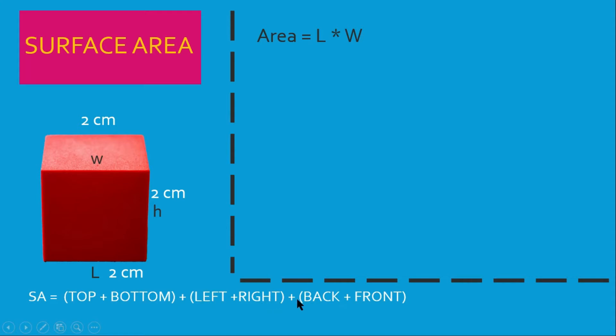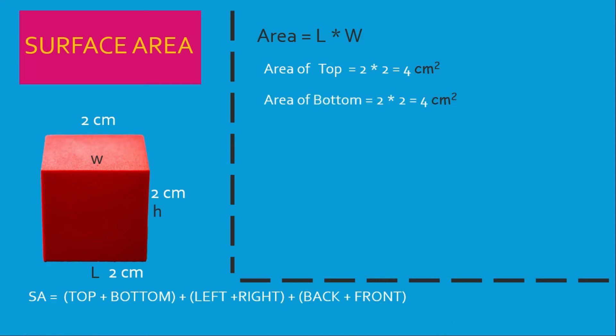Let's look at it. For the top, we have a measurement of two, and length by width gives us two times two, which equals four centimeters squared — and that's the unit. Then the bottom is going to be two times two again, length times width, and we get another four centimeters squared.